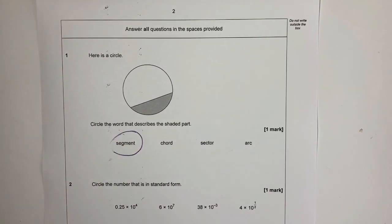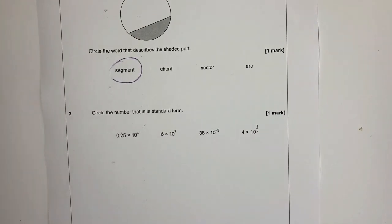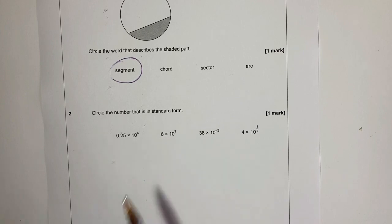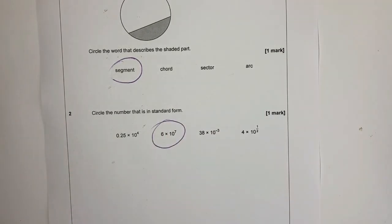In question number two, circle the number which is in standard form. Well, standard form is where the first number is between one and nine, and the index tells us the amount of decimal places that we've moved from the six. So it would be 4 × 10^7. It's always the first number is between one and nine.